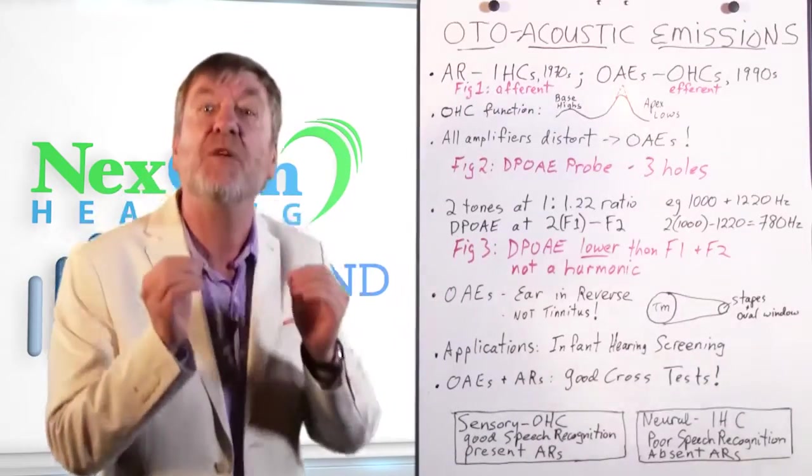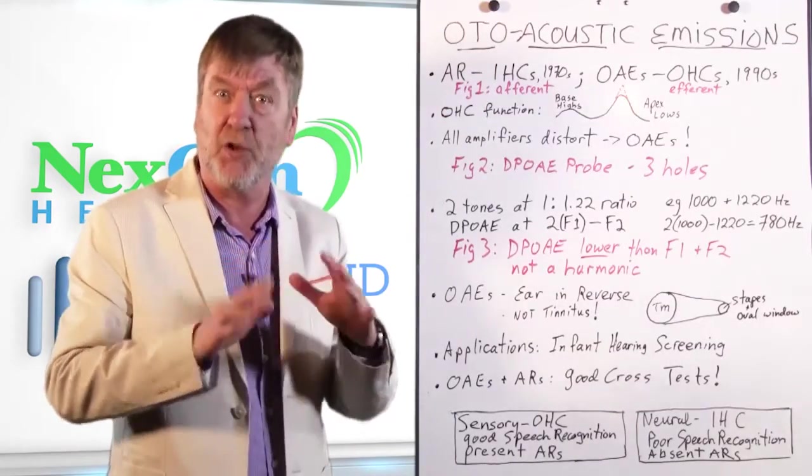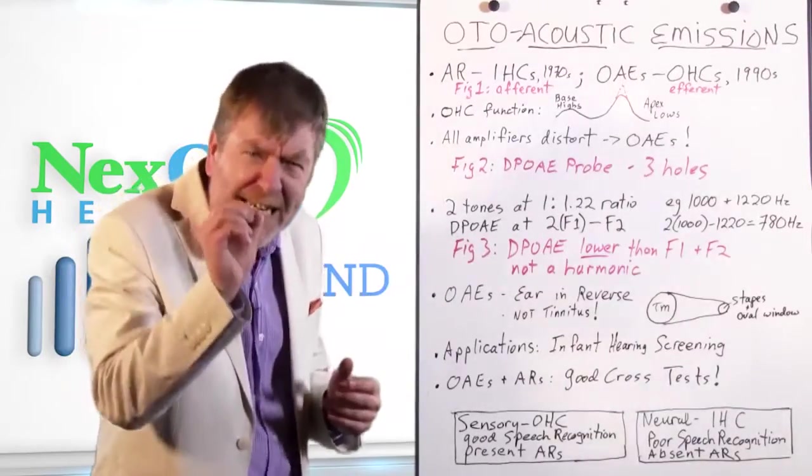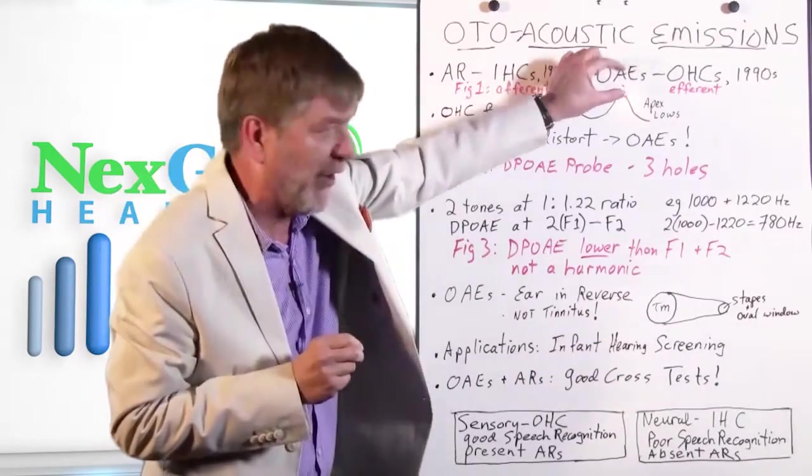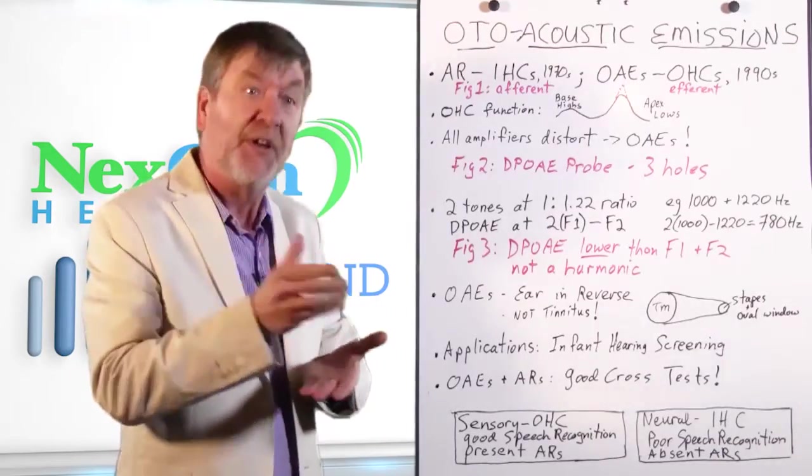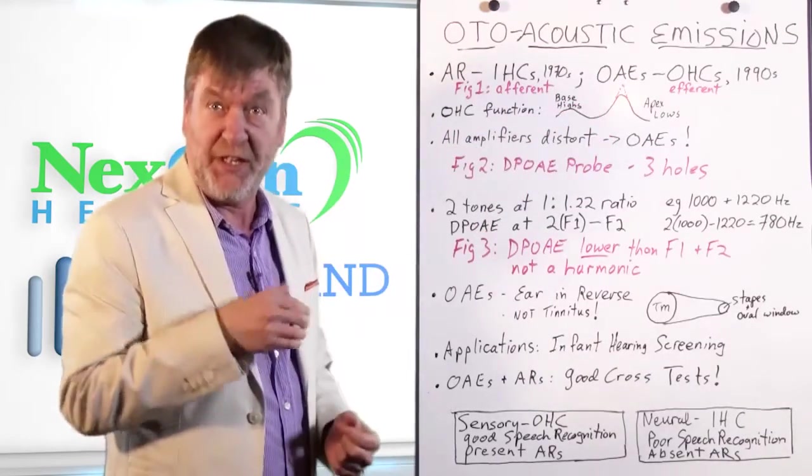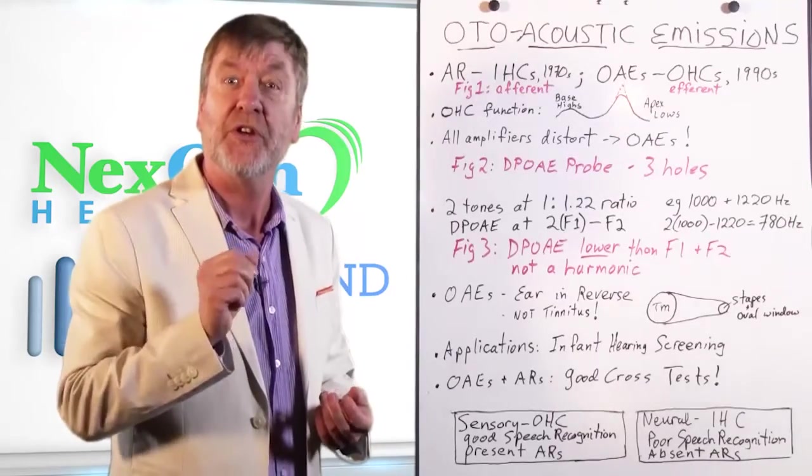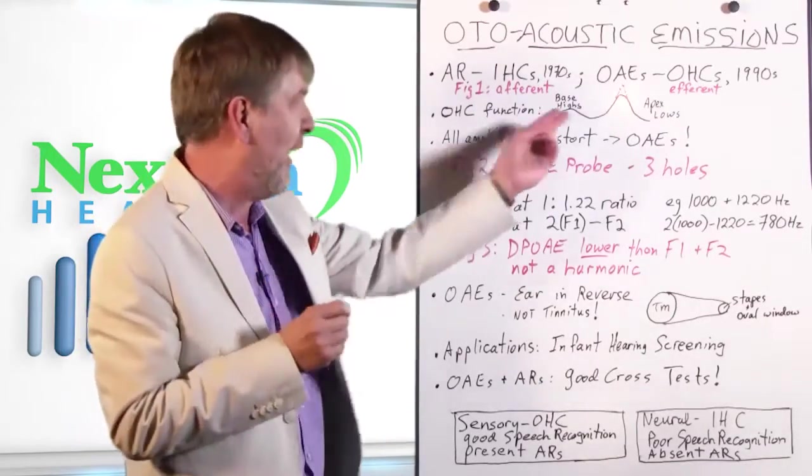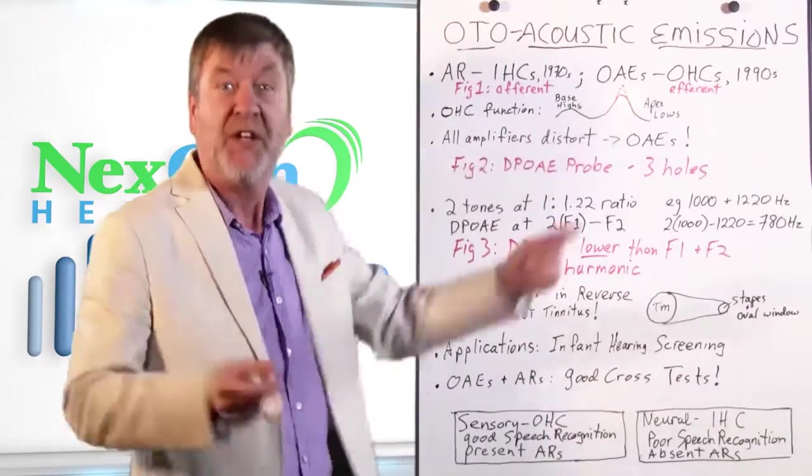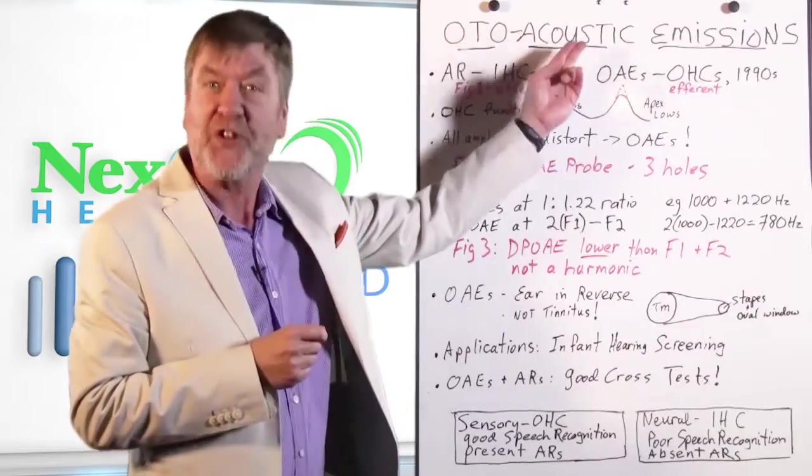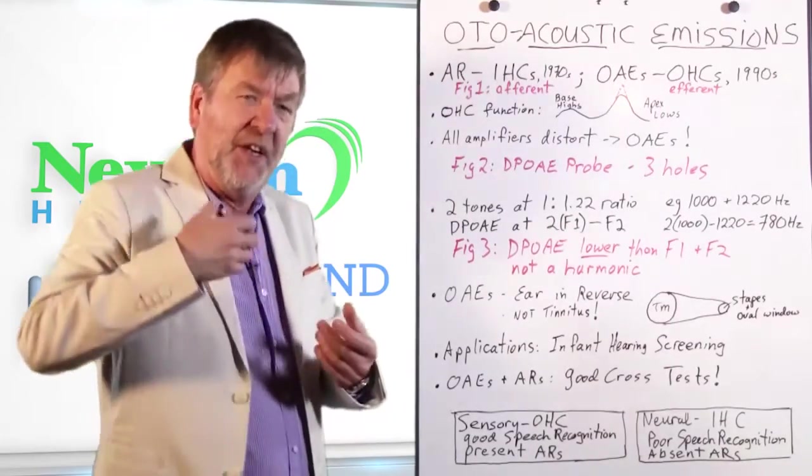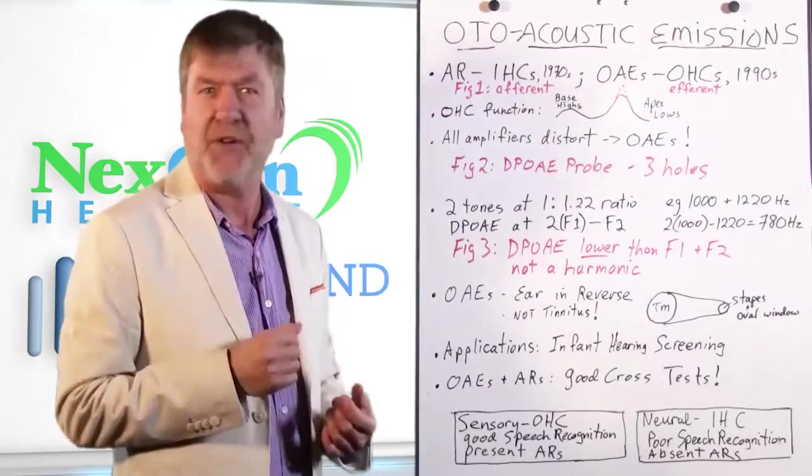Well, inner hair cells by themselves cannot sense soft sounds below conversational speech loudness. They can't pick it up. The fluid motion isn't enough to excite them. They need the mechanical action of the outer hair cells to help them sense soft sounds. Now the outer hair cells do that. The cochlea is an amplifier in that way. And like all amplifiers, you've got to pay the piper because all amplifiers distort. And guess what? The distortion created by the outer hair cells amplifying the peak of the traveling wave, that distortion is otoacoustic emissions.